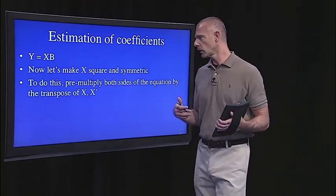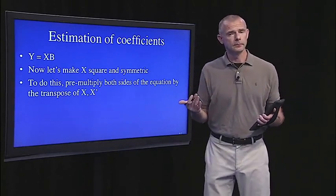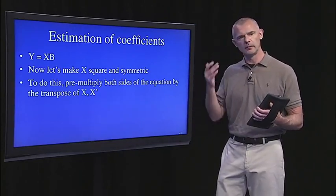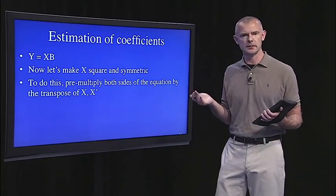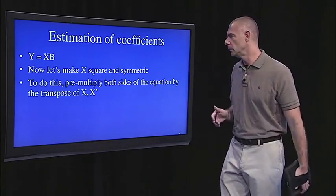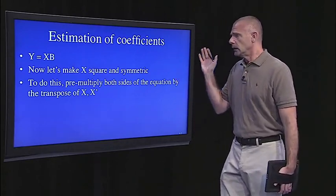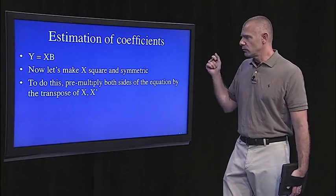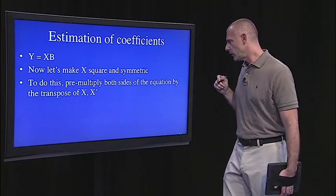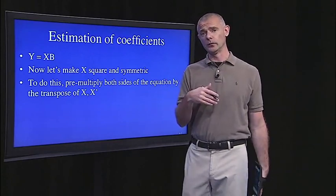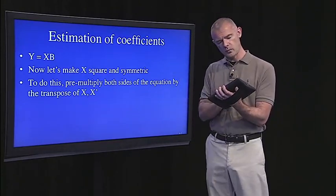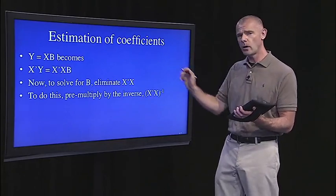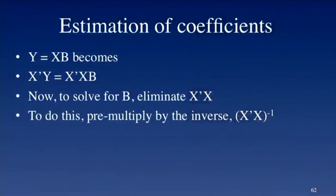Now we want to solve for B. This is just basic algebra, and the only trick is that you're looking at matrices instead of scalars. So nothing too scary here. The way to get rid of X is we need to make it square and symmetric, so we pre-multiply by its transpose. So our formula, Y equals XB—this is just basic algebra. Whatever we do to one side, we have to do the other. So we pre-multiply the left side by the transpose of X, pre-multiply the right side by the transpose of X.